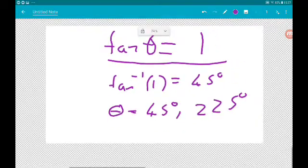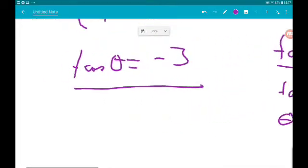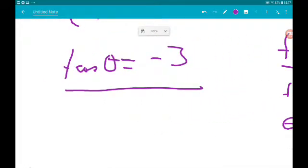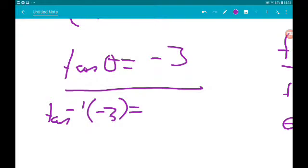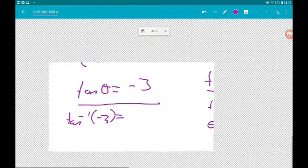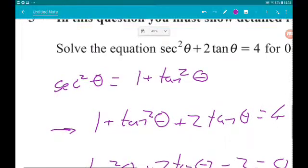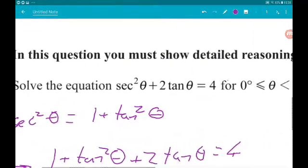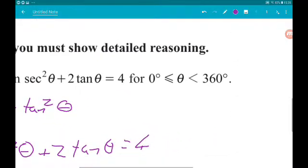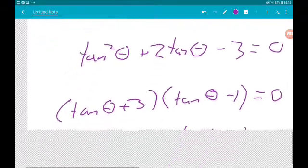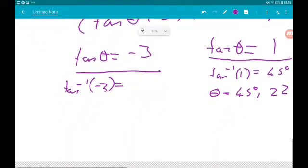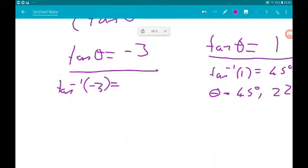So we get theta is 45 degrees and then add 180 and we get 225. And then over here, the inverse tan of minus 3. Now it doesn't ask for decimal places, doesn't ask for specific accuracy.